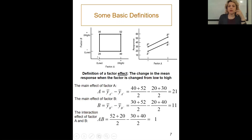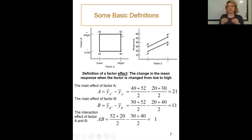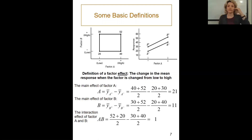That measurement of 20 is the data point we read from the experiment. If we run at the high level of temperature and the low level of Factor B (purity), the measurement is 40. The value 52 represents the result when temperature is at the high level and Factor B (purity) is also at the high level.